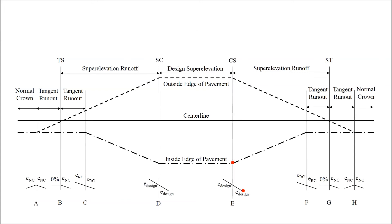The inside edge of pavement will rotate along with the outside edge of pavement until point F. Point F is the reverse crown point, and beyond this point — similar to point C — the outside edge of pavement is still above the center line. After point F, no more rotation of the inside edge of pavement will occur. Similar to point B, point G is the adverse crown removed point and represents the ST point for a spiral curve and the end of the superelevation runoff for a simple curve. The distance from point F to point G is the tangent runout length, and the outside edge of pavement is at the same elevation as the center line.